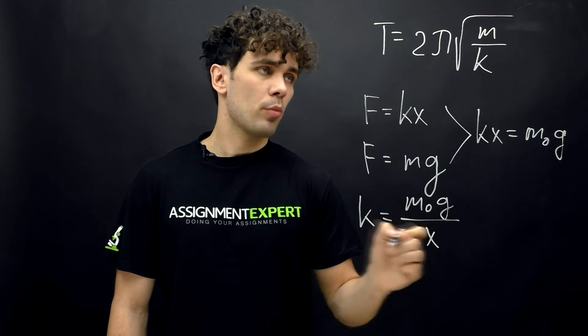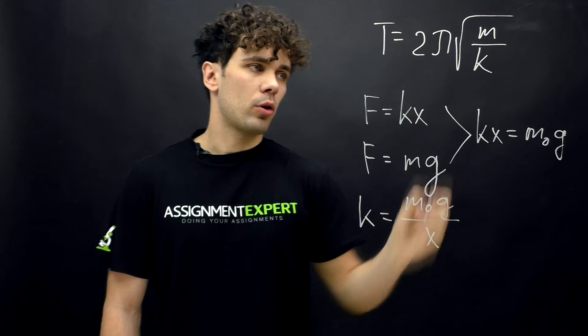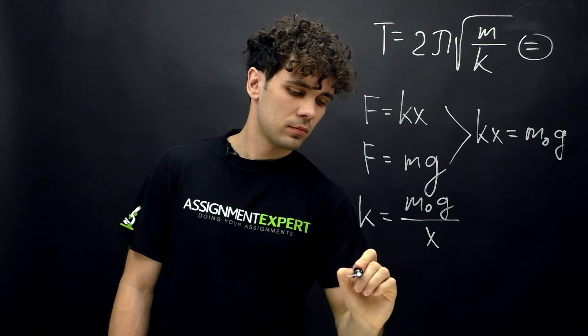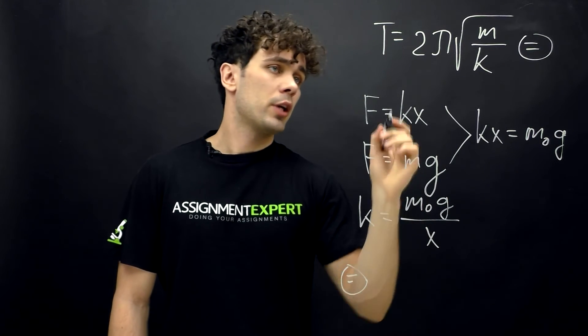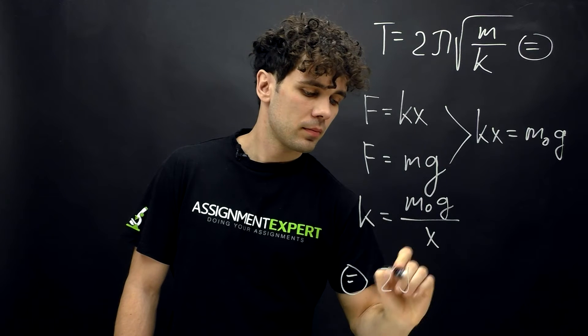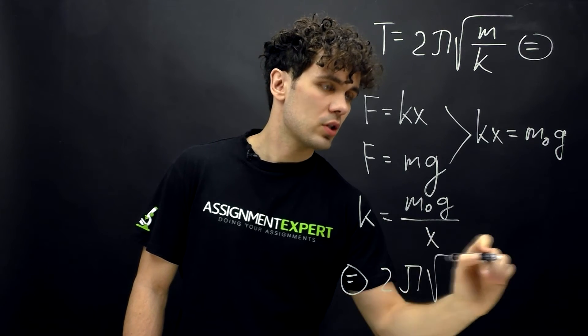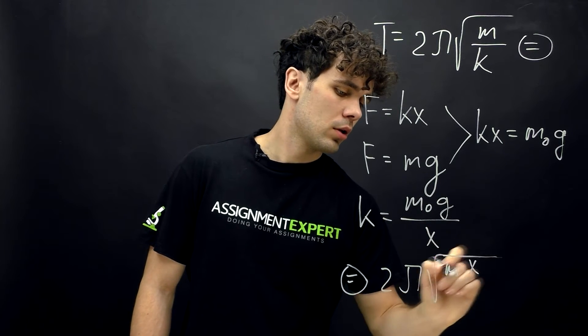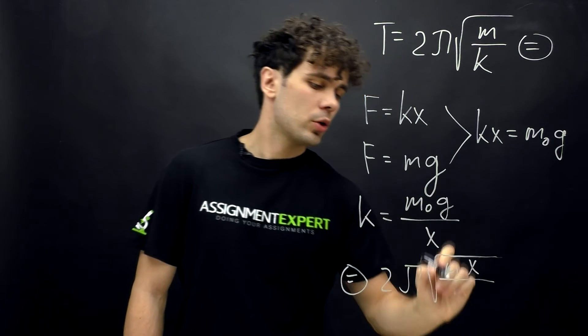And now let's put this formula into the period formula. We get 2 pi times the square root of m times x over m0g.